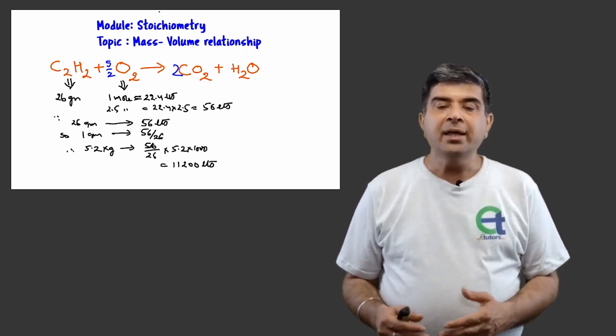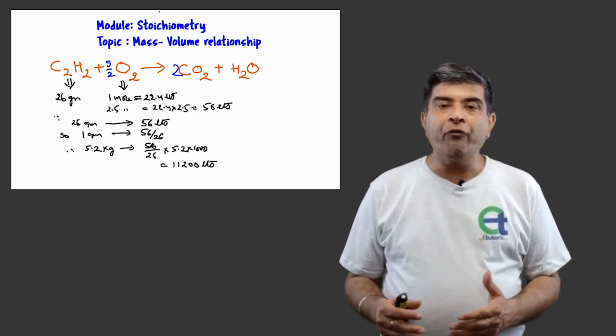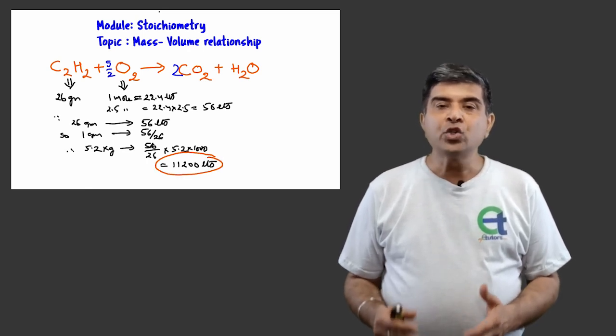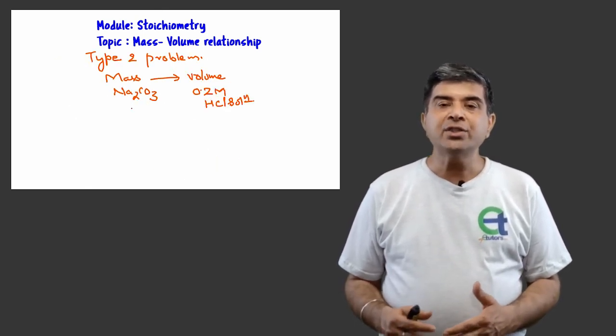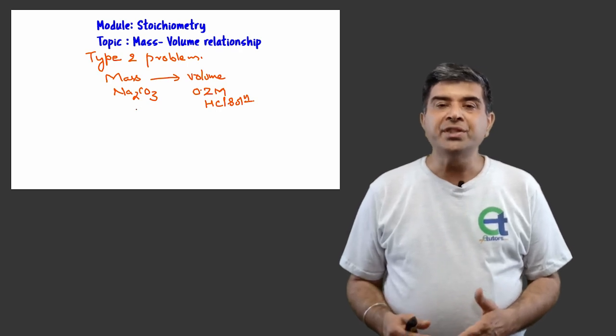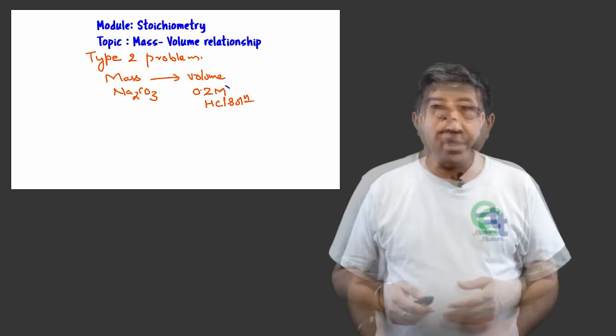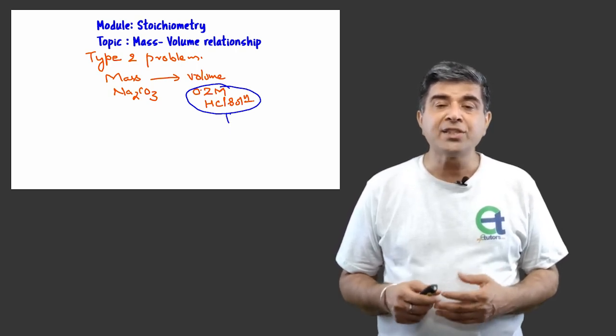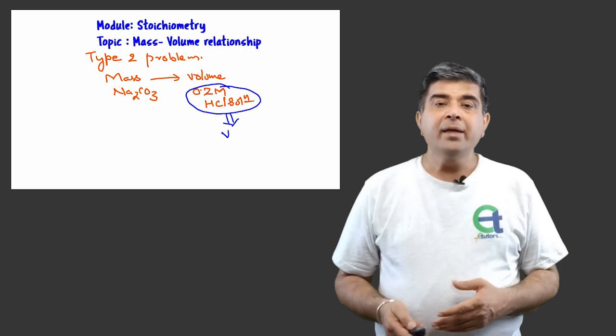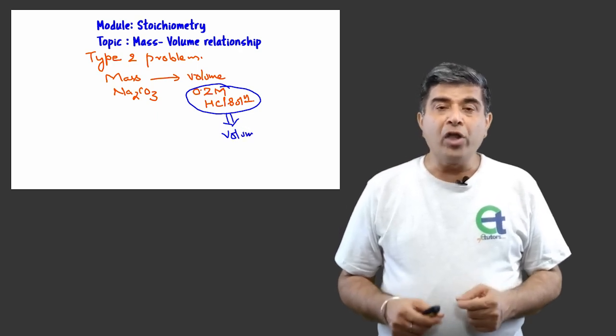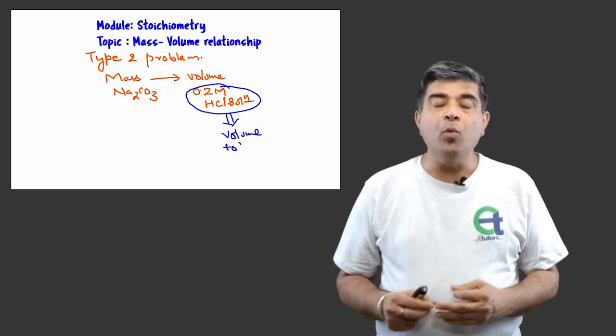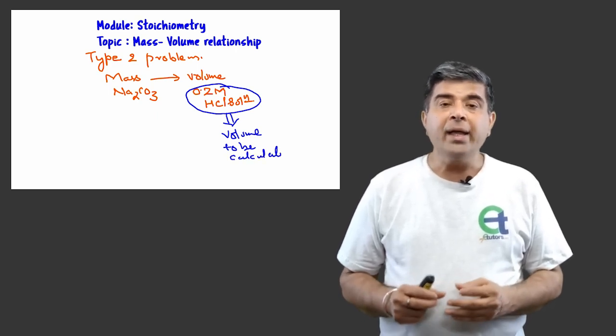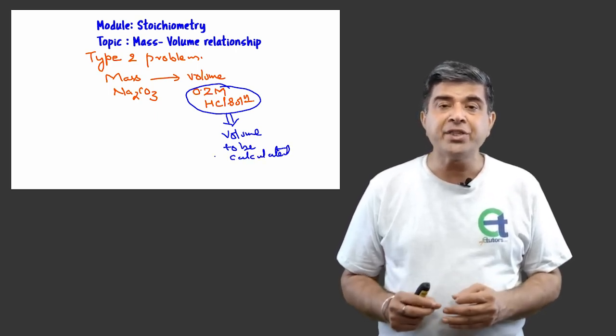This would give us 11,200 liters of oxygen at STP. So the answer to the problem is 5.2 kilograms of acetylene would require 11,200 liters of oxygen at STP. The second type of question in mass-volume relationship involving solutions would be to calculate volume of 0.2 molar hydrochloric acid required for complete neutralization of 0.5 grams of sodium carbonate.